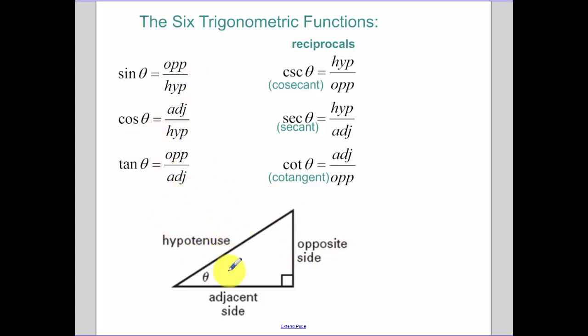Cosine of theta, that ratio, is adjacent over hypotenuse. And our tangent is opposite over adjacent. And hopefully your teacher last year gave you the mnemonic device of SOHCAHTOA. That's a mnemonic device to help you with remembering our common three.